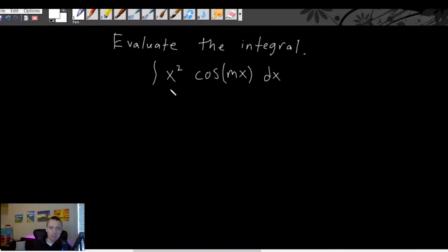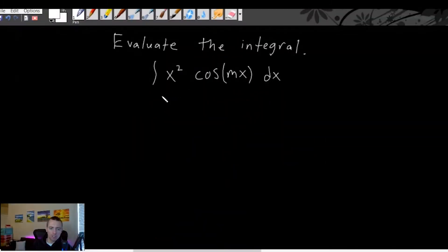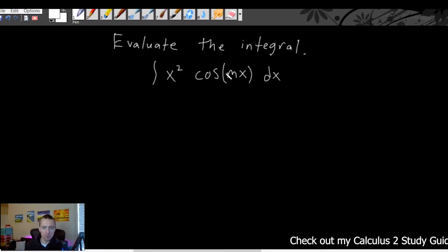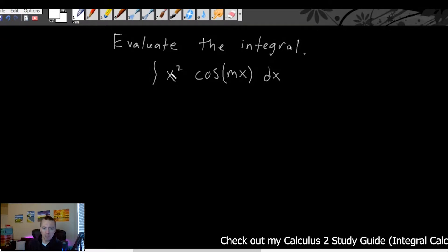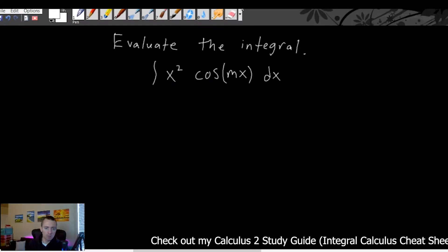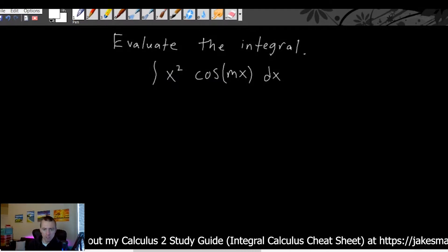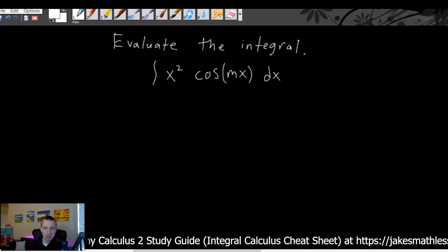We are going to evaluate the integral of x squared times cosine of mx dx. In this case, m is treated as an unknown constant — not a variable. This would be the same as saying the integral of x squared times cosine of 4x or pi x or whatever — just some unknown constant.